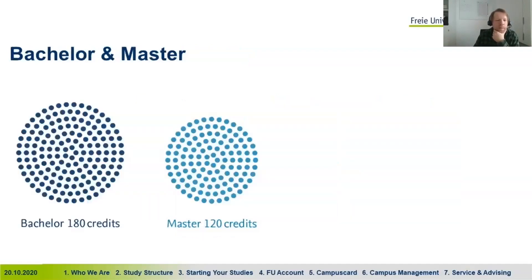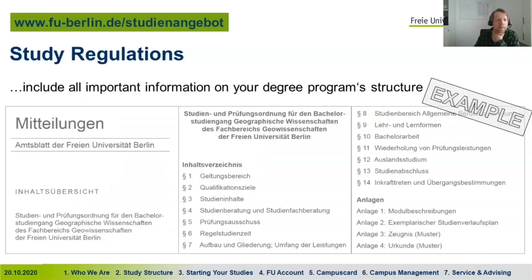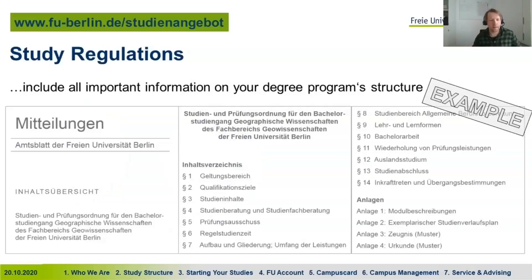At this university we mainly have bachelor and master's programs. Bachelors are usually 180 credits, master's 120 credits, and one credit equals 30 hours of work. This doesn't mean 30 hours at university — it includes everything from preparation to writing exams to reading. Everything you put into studying is calculated in that credit calculation.